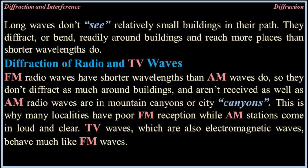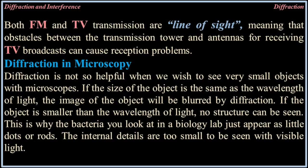This is why many localities have poor FM reception while AM stations come in loud and clear. TV waves, which are also electromagnetic waves, behave much like FM waves. Both FM and TV transmission are line-of-sight, meaning that obstacles between the transmission tower and receiving antennas can cause reception problems.